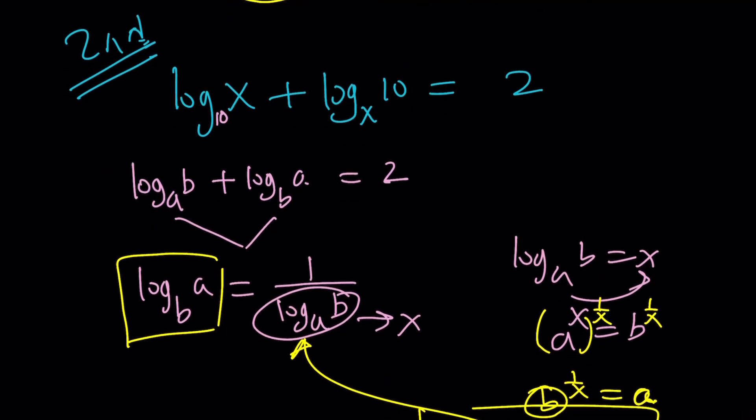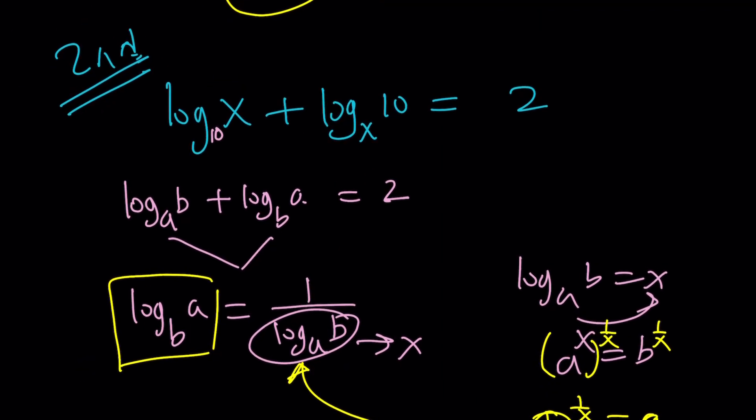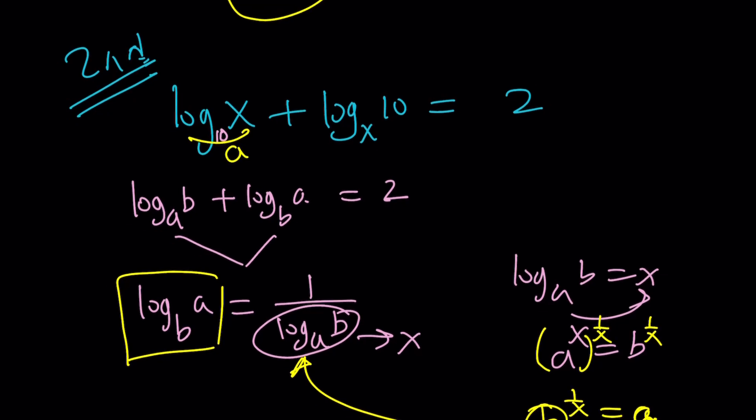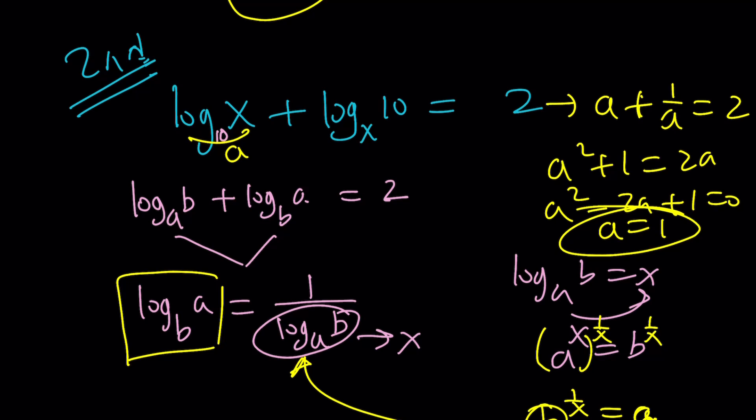If you add two reciprocals and the sum is 2, let's call this a. This gives you a plus 1 over a equals 2. From here, you get a squared plus 1 equals 2a, or a squared minus 2a plus 1 equals 0. As before, a equals 1 from here. If a equals 1, then obviously x should be 10, because when you set log x equal to 1, you get x equals 10 as before.